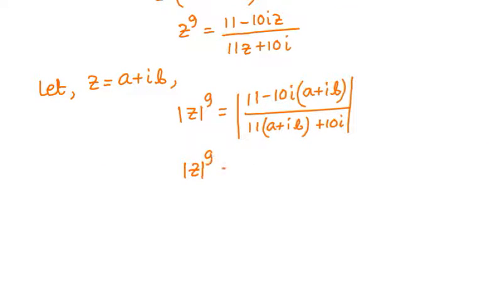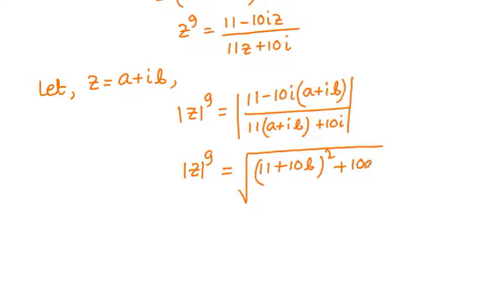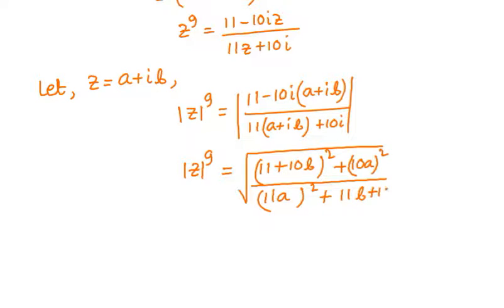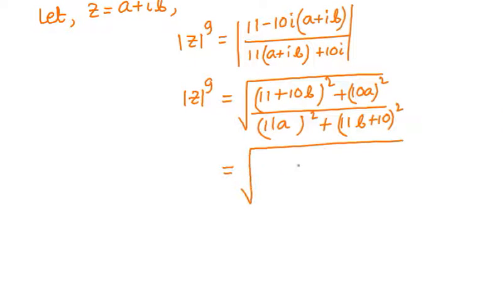Modulus of z to the power 9 equals the square root of (11 plus 10b) whole squared plus (10a) whole squared, using the magnitude formula for complex numbers: root of real part squared plus imaginary part squared. The denominator becomes square root of (11a) squared plus (11b plus 10) squared.